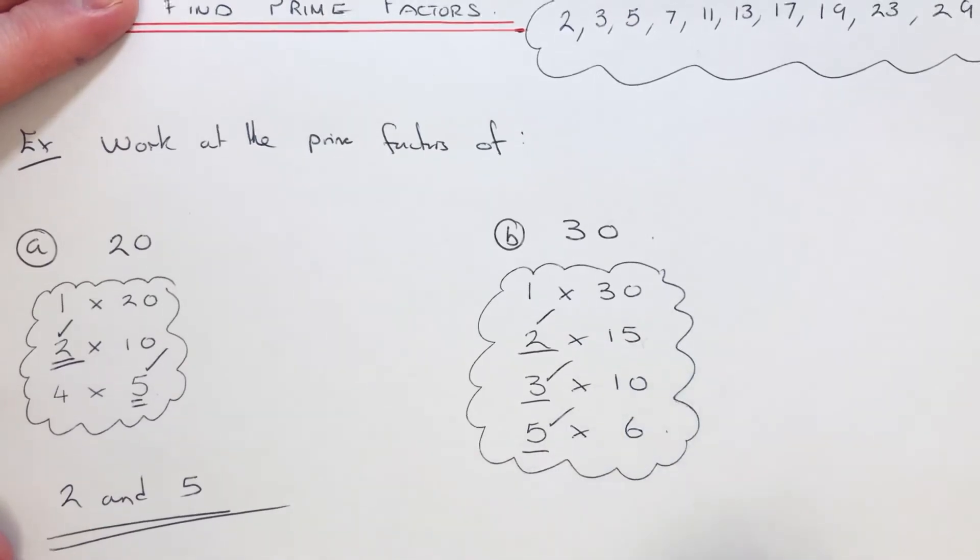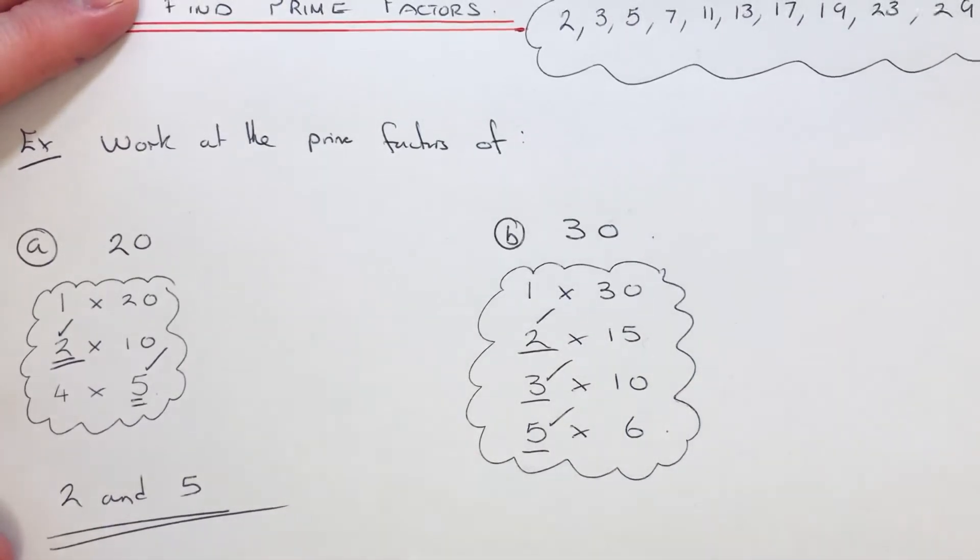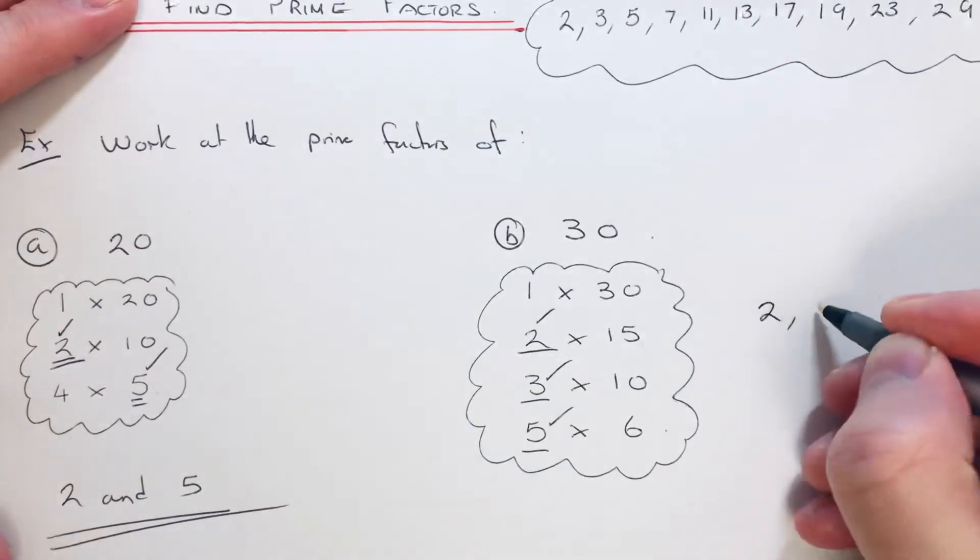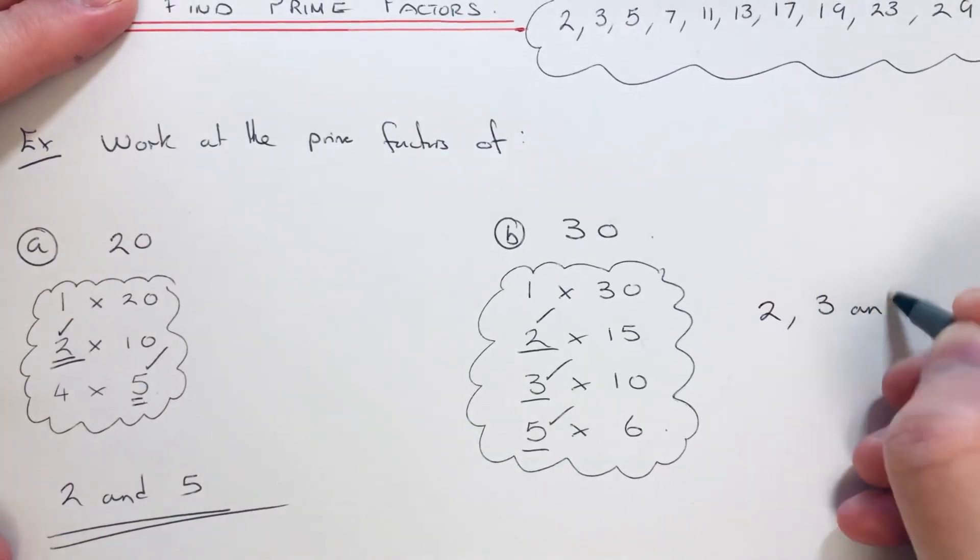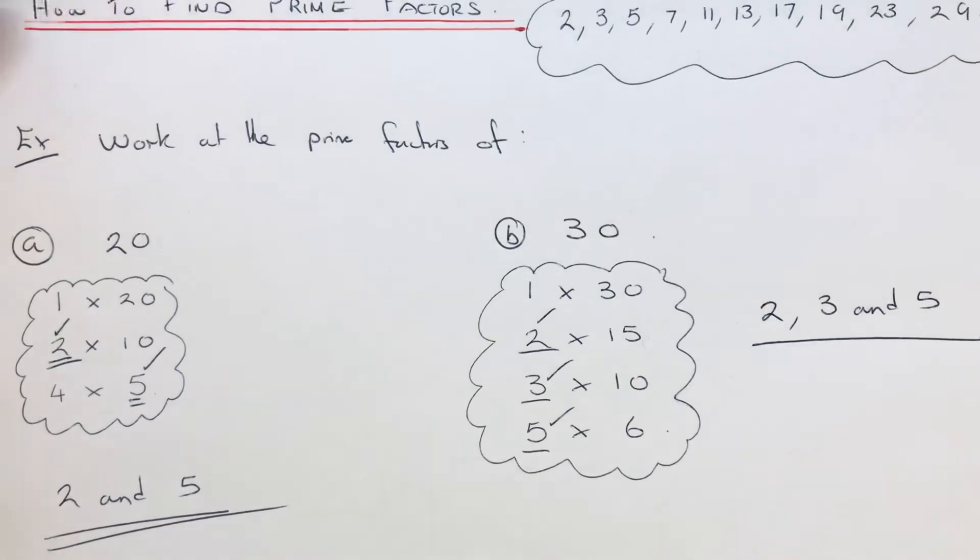So this time we have 3 prime factors of 30: 2, 3, and 5.